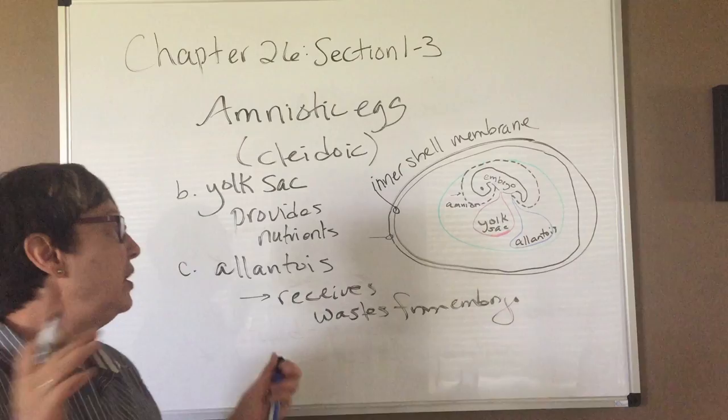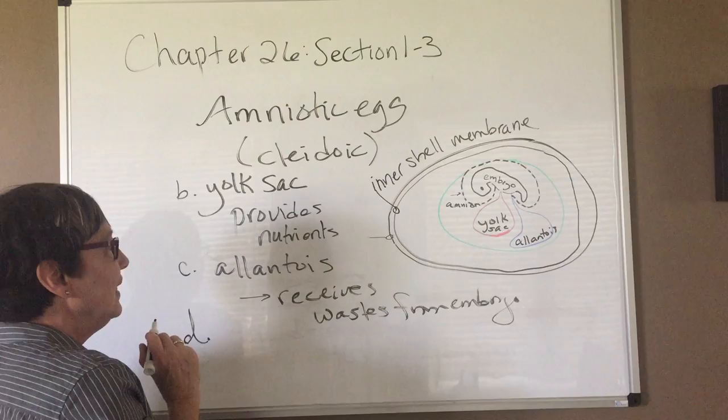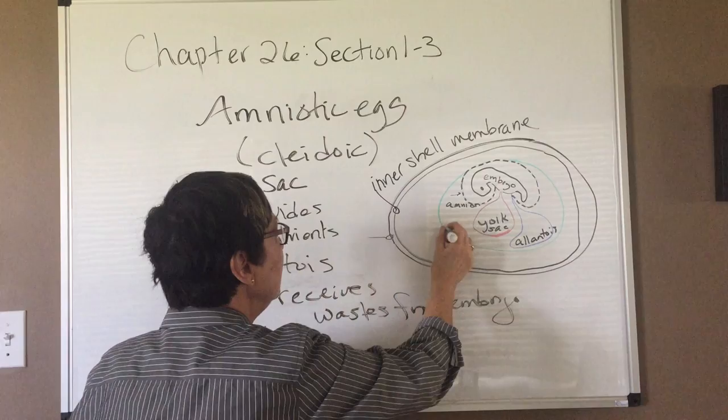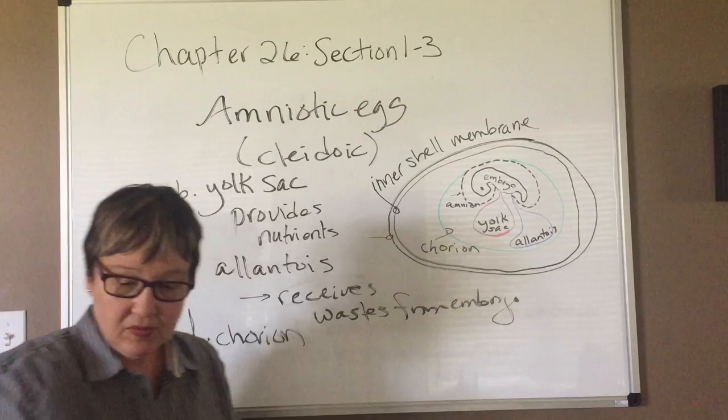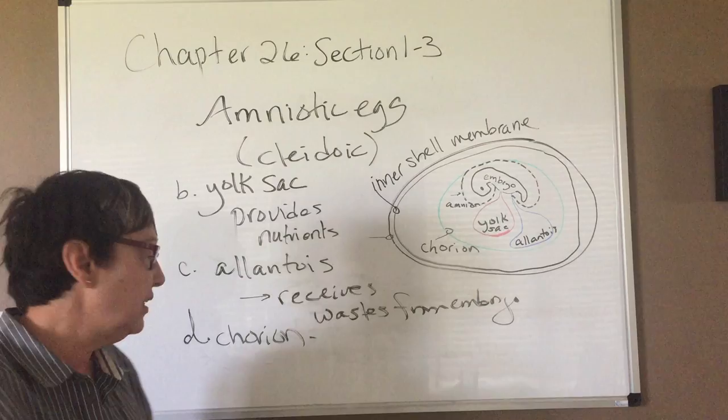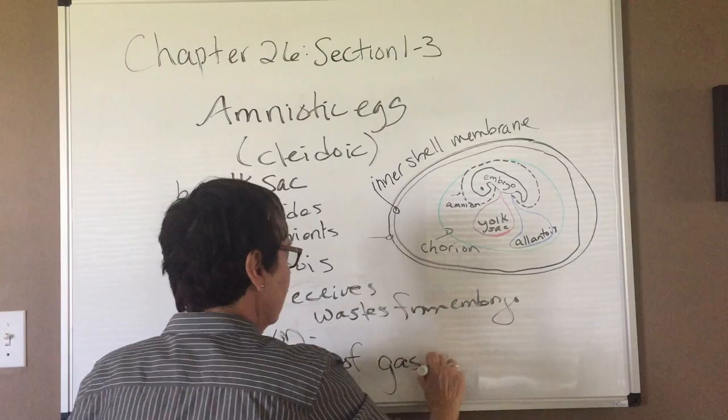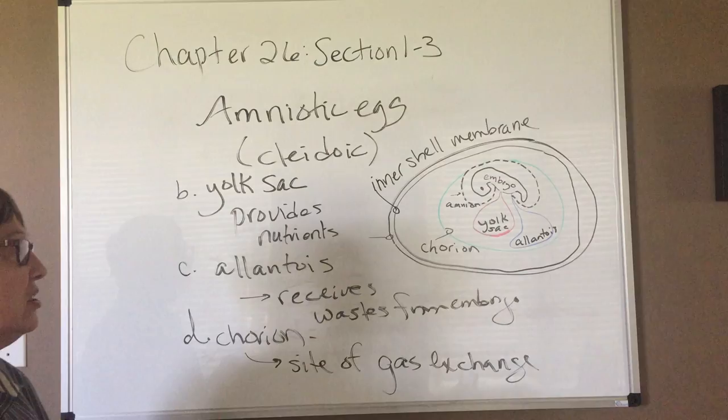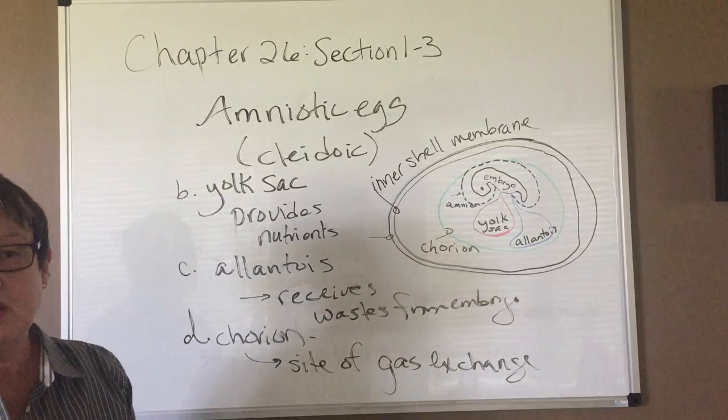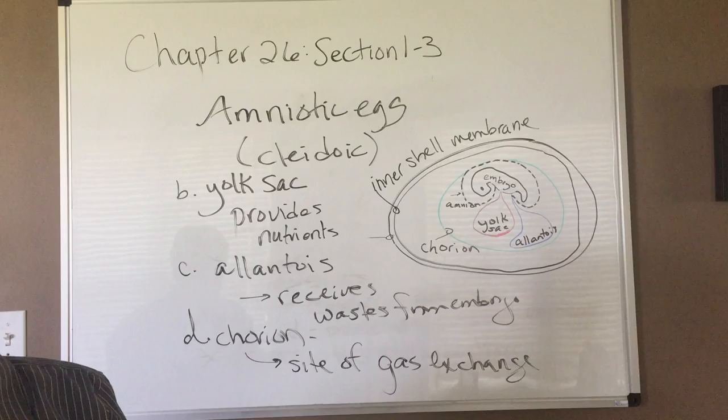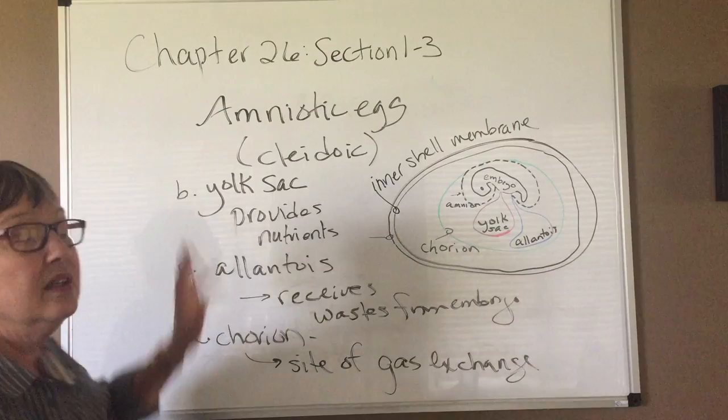That leaves one last membrane of the four total, not counting the shell. And so this would be D. And this is called the chorion. And it's shown here in green. C-H-O-R-I-O-N. And this is an important membrane—in humans this becomes part of the placenta—but this is going to be the site of gas exchange. So oxygen and CO2 are going to make their way across this membrane on their way to the embryo or away from the embryo.